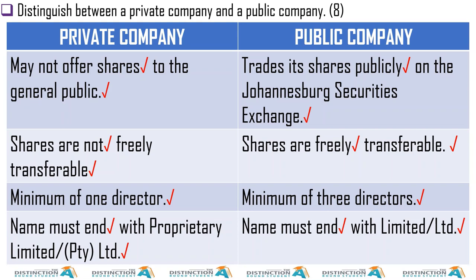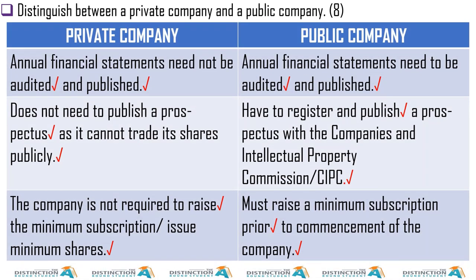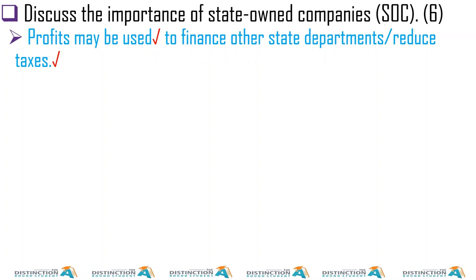Distinguish between a private and a public company. The main distinction is that a public company's shares are sold to the general public and are freely transferable. A private company's shares are not freely transferable and not sold to the general public. A private company has a minimum of one director; a public company has a minimum of three directors. A private company's name ends with PTY LTD; a public company's name ends with Limited.